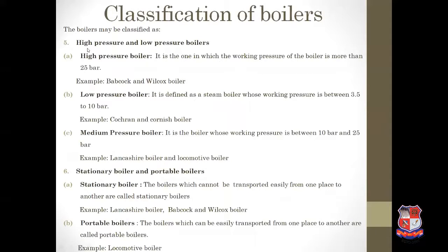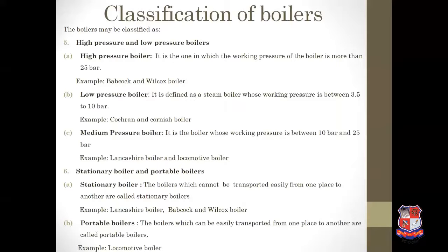Next classification is high pressure and low pressure boiler. If the working pressure of the boiler is more than 25 bar, it is called a high pressure boiler — example is the Babcock-Wilcox boiler. If the working pressure is between 3.5 to 10 bar, it is called a low pressure boiler — examples are Cochrane and Cornish boiler. If the working pressure is between 10 bar and 25 bar, it is called a medium pressure boiler — examples are Lancashire boiler and locomotive boiler.